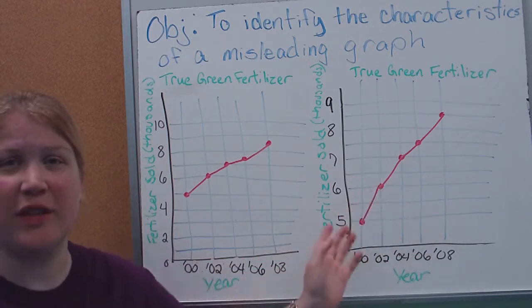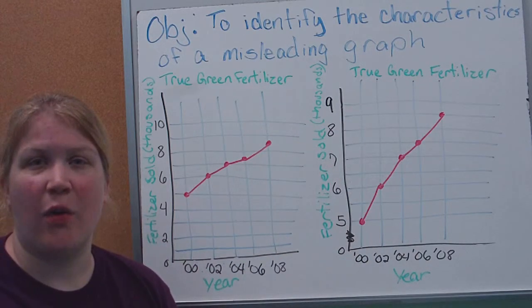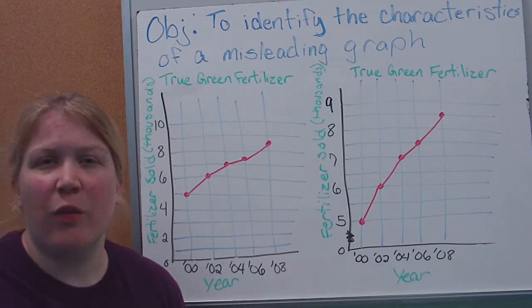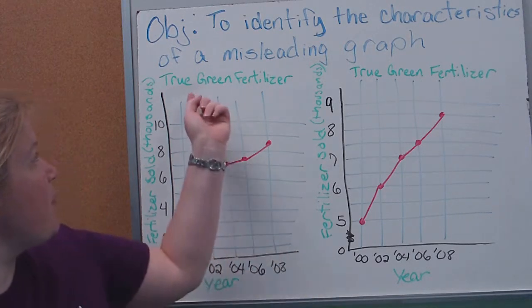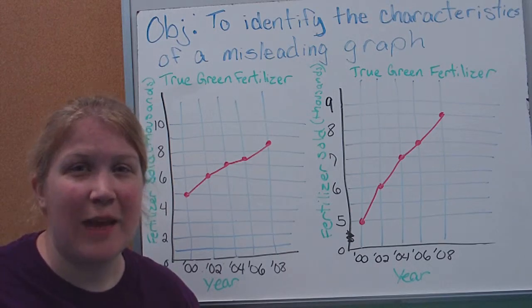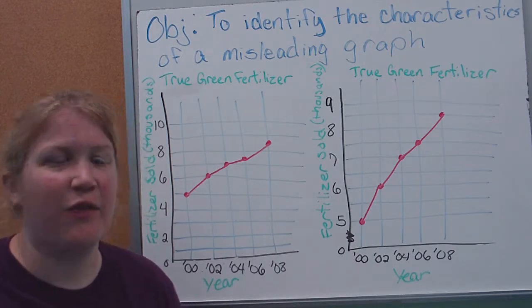Well, this one over here looks like it's growing quicker and going up further. But let's take a look at what we're looking for. The first thing we want to look at is our titles and labels. I'm looking at True Green Fertilizer, so I'm looking at the same thing in both of them. Why do they look different?